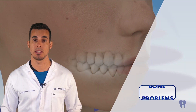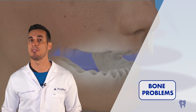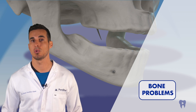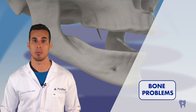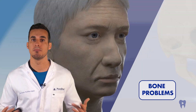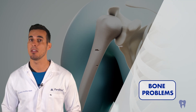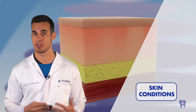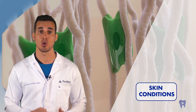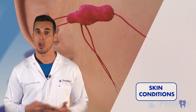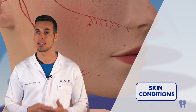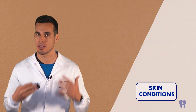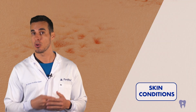Gum disease, especially the more severe forms, can affect bone density related to osteoporosis. Bacteria and gum inflammation can lead to bone loss in the jaw and possibly influence overall bone health. Some skin diseases such as psoriasis and certain forms of dermatitis have shown correlations with oral health. While the exact relationship is still unclear, it is thought that systemic inflammation, including chronic inflammation in the mouth, could play a role in these skin disorders.